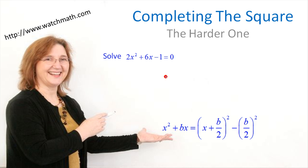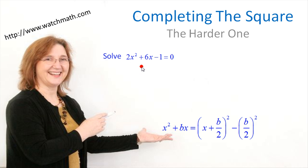Recall that in the previous video, the method of completing the square is to change an expression like x squared plus bx into a difference of two squares. It is common practice in mathematics to transform a problem into another that is easier to solve. In this problem, we want the coefficient of x squared to be equal to 1.